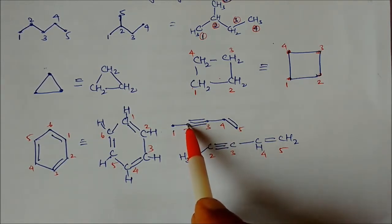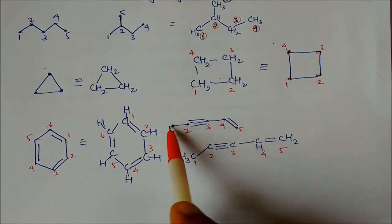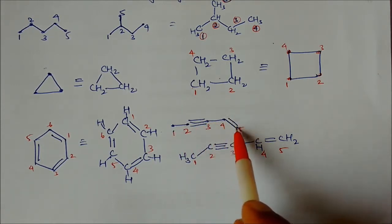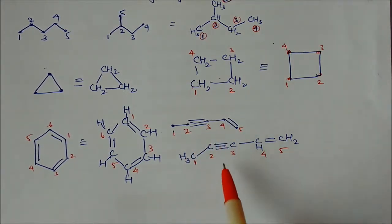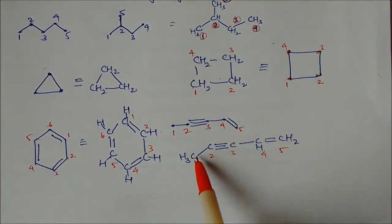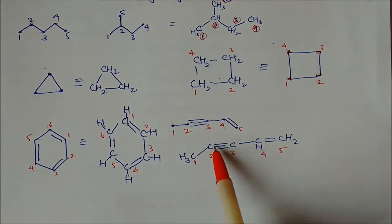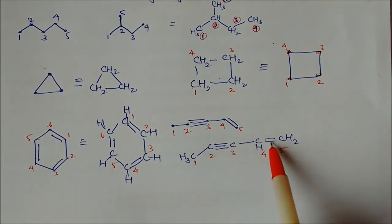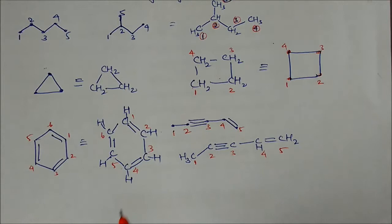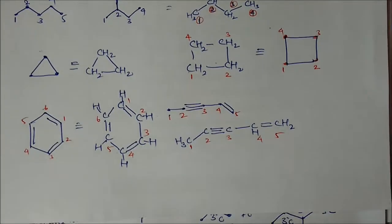For a triple bond, the two carbons form a straight chain — you cannot make a zigzag for a triple bond, it must be straight. So for four carbons with a triple bond, the condensed form would be CH3-C≡C-CH3. You can also write the chain in a zigzag fashion for the single-bond portions. These are the examples of bond line notations.